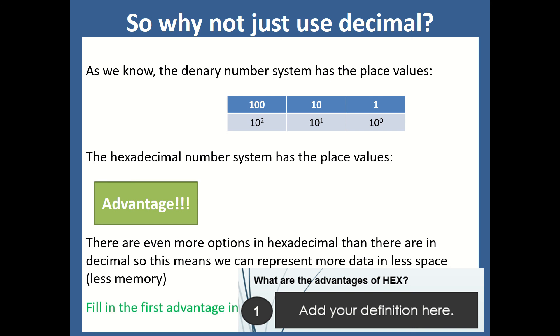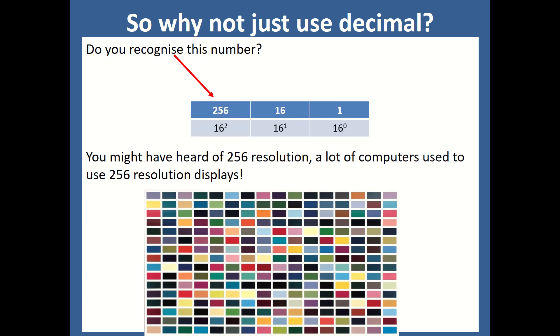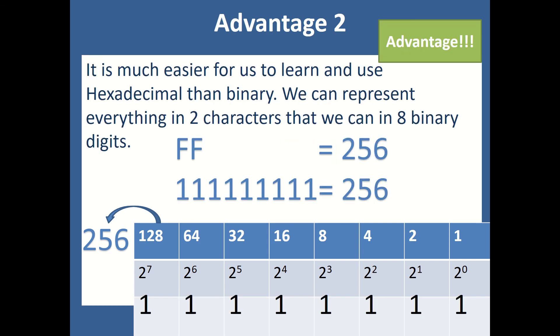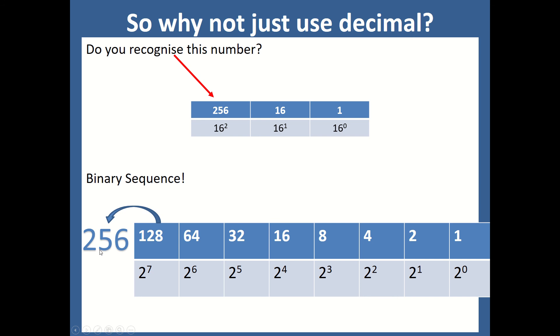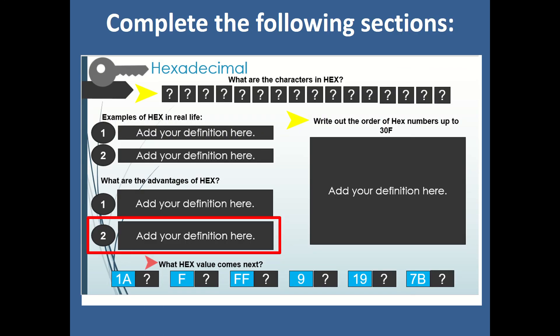So, do you recognise this number anyway, 256? You might have seen that number when you're looking at resolution of computers. Computer screens have 256 colours. The next number in the binary sequence would be 256. So, actually, in binary, where we'd take nine placeholders, or nine bits to reach 256, we can do that in just three in hexadecimal. It's actually much easier for us to learn than it is for us to learn binary. It's obviously more challenging to learn than denary, because we know that already. But once we understand the denary system, we can learn hexadecimal. So, it's much easier for us to understand than binary. So, if you'd like to add that onto your second advantage for me, please, that's perfect.